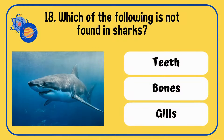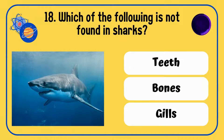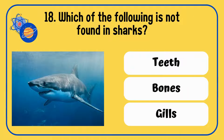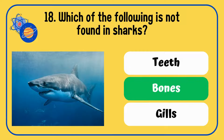Which of the following is not found in sharks — teeth, bones, or gills? The answer is bones.